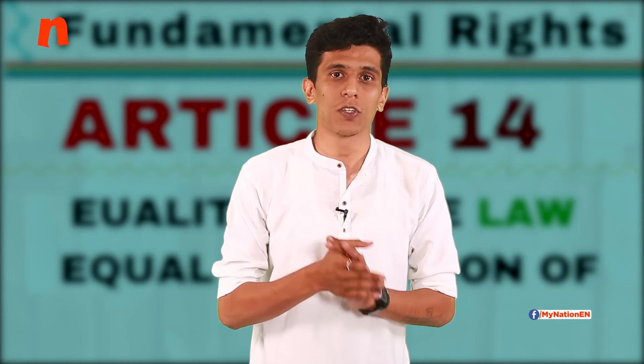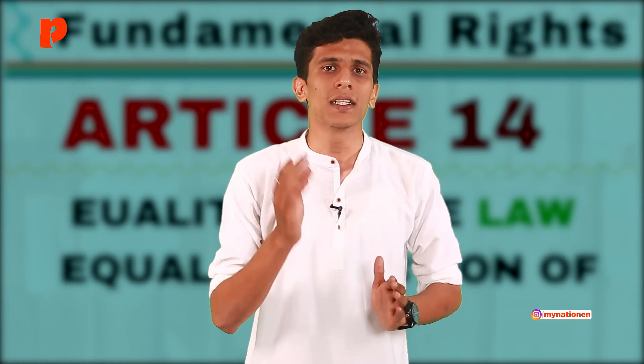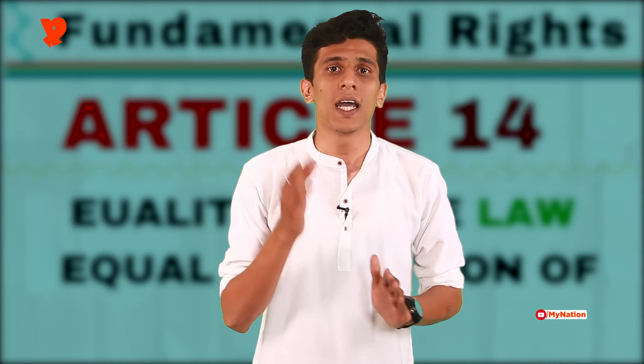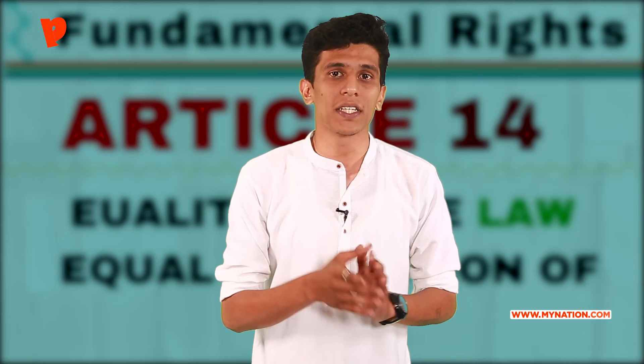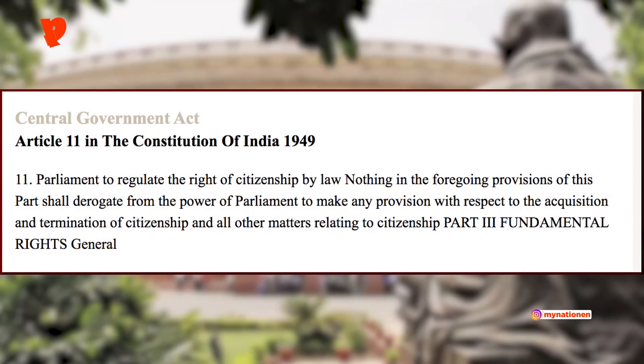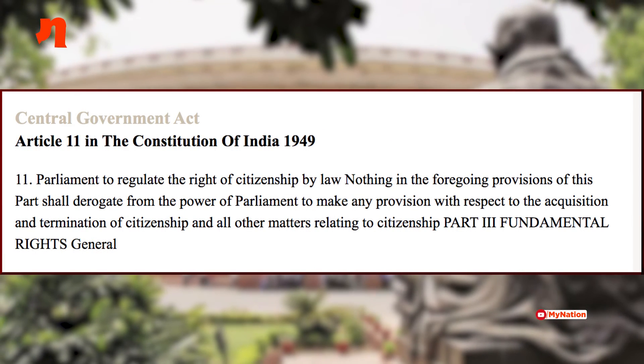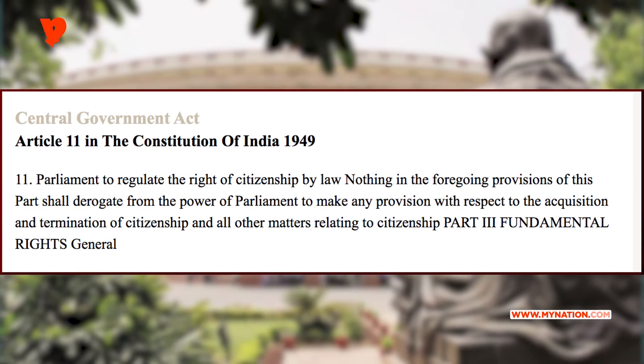The Supreme Court also said that the classification of groups of people is considered to be reasonable when the classification is based upon intelligible differentia that distinguishes persons or things that are grouped from others that are left out of the groups, and the differentia has a rational relation with the objective of the Act. Article 11 of the Constitution says Parliament is empowered to make any law relating to the acquisition or termination of citizenship and all other matters relating to citizenship.